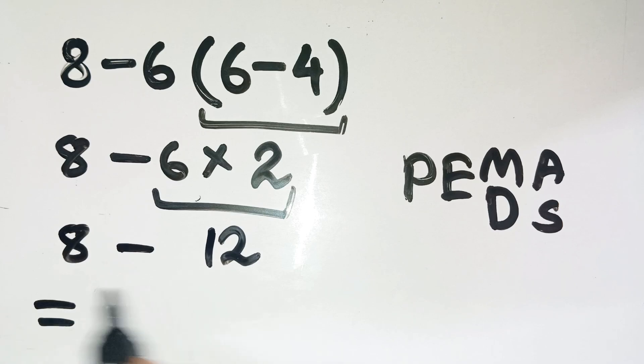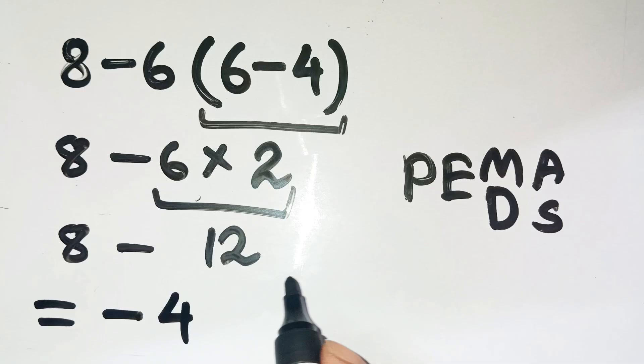Now the equation is eight minus twelve. Simple subtraction now, and eight minus twelve gives us negative four. Yep, negative four, not positive four like everyone assumes. So the correct answer is negative four, not four.